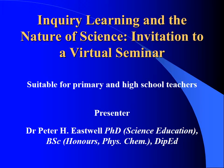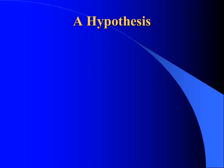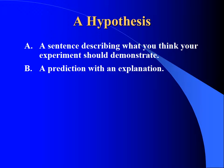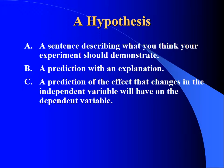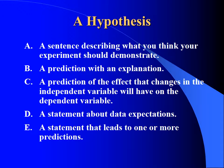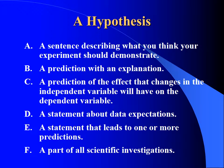Are you confused by the use of terminology in scientific investigations? Terms like hypothesis, prediction, and conclusion. Take a hypothesis for example — which of these do you think are acceptable descriptions of a hypothesis? There may be more than one. Is a hypothesis a sentence describing what you think your experiment should demonstrate? A prediction with an explanation? A prediction of the effect that changes in the independent variable will have on the dependent variable? A statement about data expectations? Or a statement that leads to one or more predictions? Are you surprised to find that only one of these descriptions stands up to scrutiny?